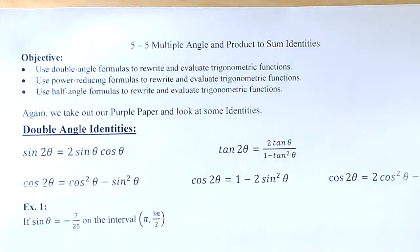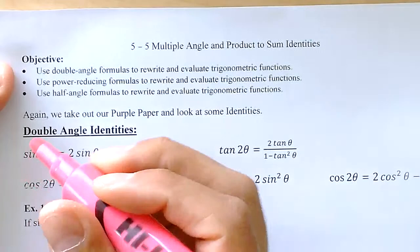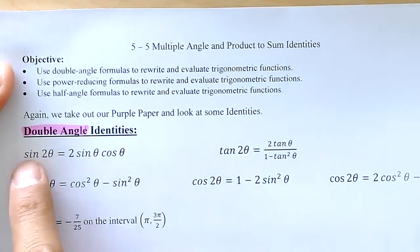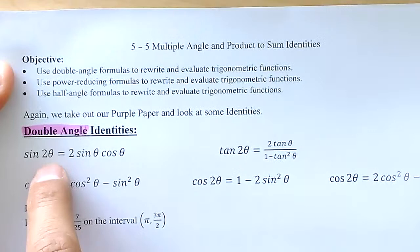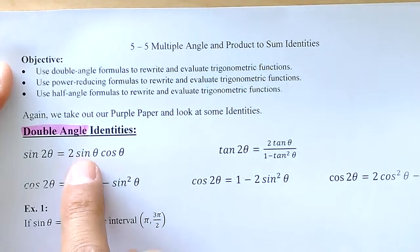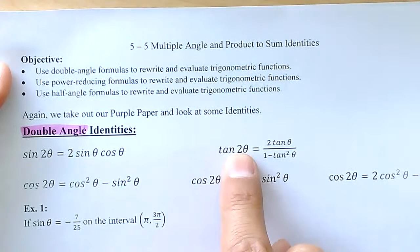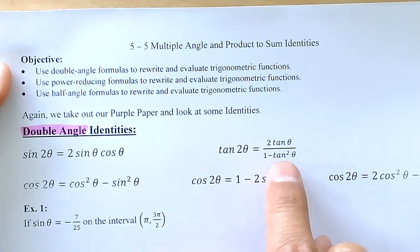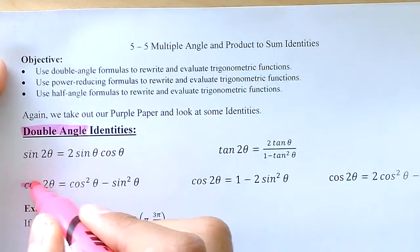As we move forward, we're going to talk about some double angle identities. These are also on the formula paper, but I'm going to put them here as well. When we talk about a double angle, the sine of 2 times theta equals 2 times the sine of theta times the cosine of theta. For the tangent, it is 2 times the tangent divided by 1 minus the tangent squared.